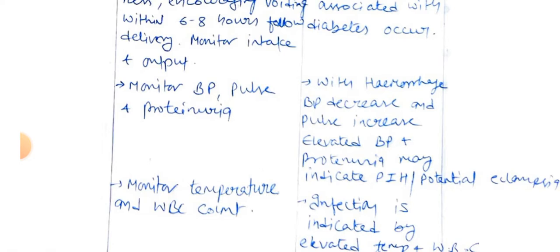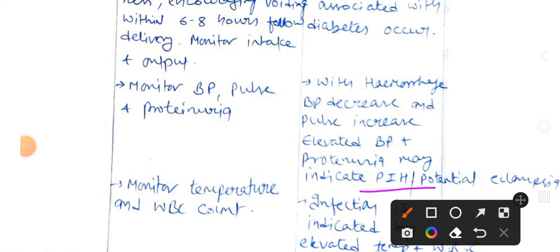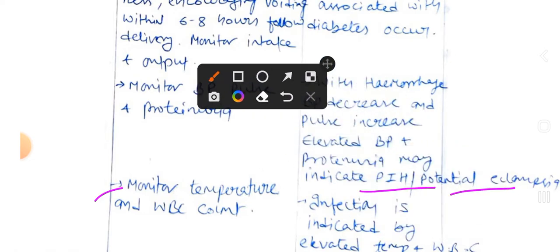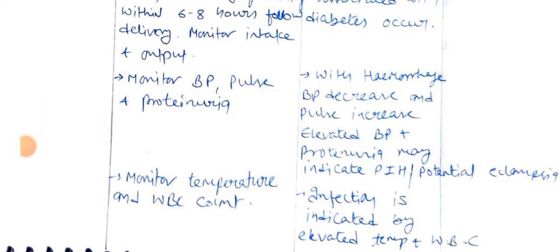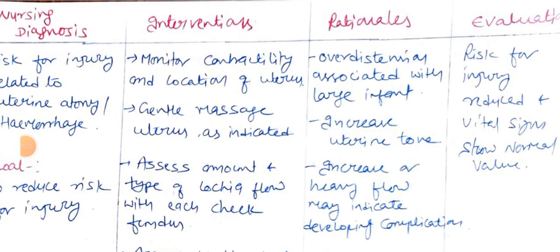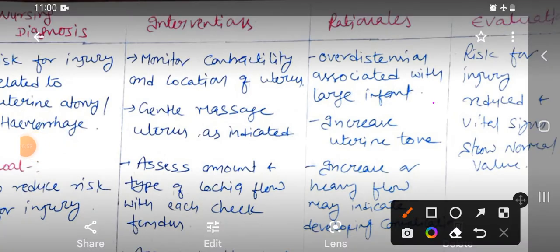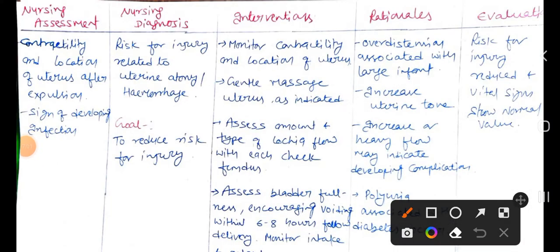Monitor blood pressure, pulse, and proteinuria — rationale: with hemorrhage, BP decreases and pulse increases; elevated BP and proteinuria may indicate preeclampsia or eclampsy. Monitor temperature and WBC — rationale: infection is indicated by elevated temperature and WBC. Evaluation for diagnosis two: risk for injury reduced and vital signs show normal values.